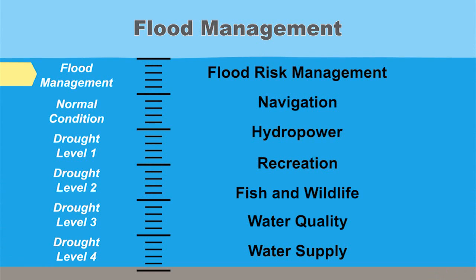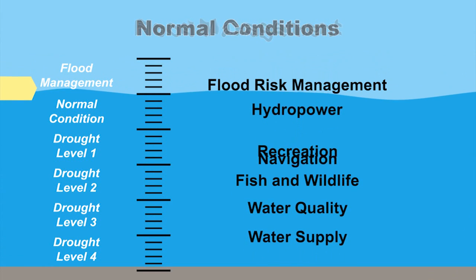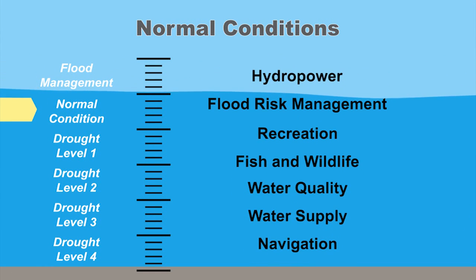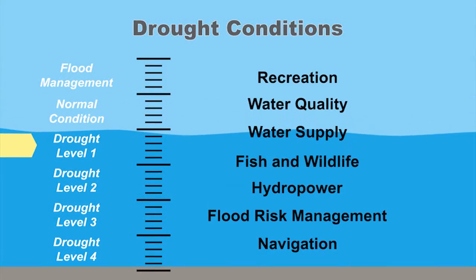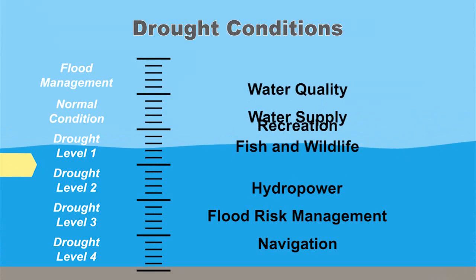From full pool down to drought trigger level 1, you can service all the authorized purposes equally. From drought trigger level 1 to drought trigger level 2, recreation becomes a higher focus because you're trying to keep those ramps in place a little bit longer to allow people to have access to the water, as well as the recreation areas and the beaches.